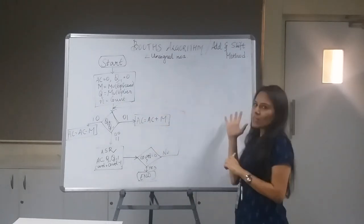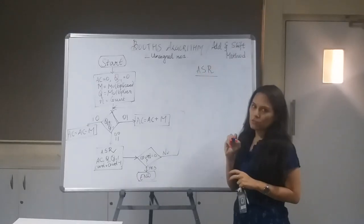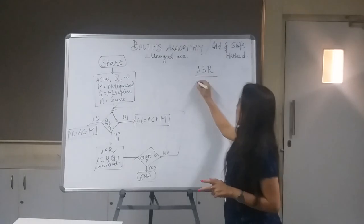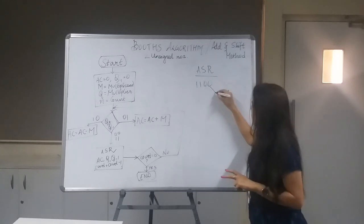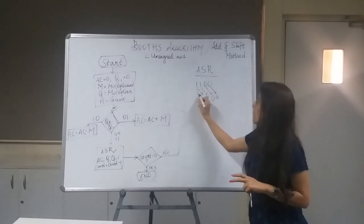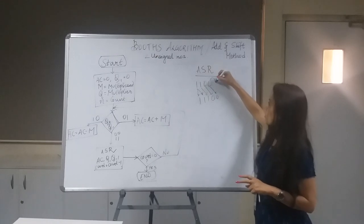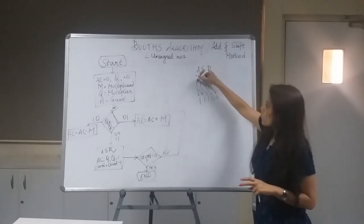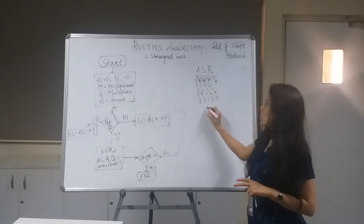Before moving to the example, let me make you understand what is ASR or arithmetic right shift. This zero will be here, this one will be here, and this one will be here, and this one will be repeated here. You are shifting one bit towards the right, and the last bit you are shifting, plus you are repeating this. So this is my arithmetic right shift.